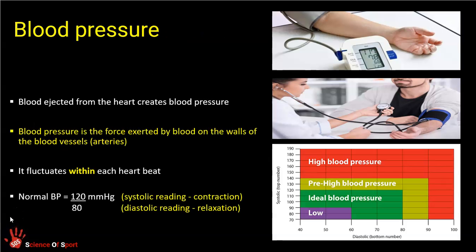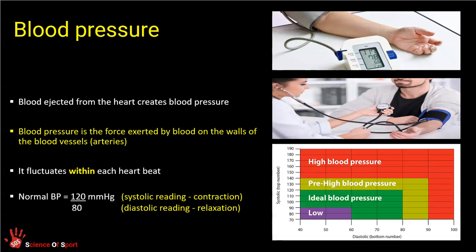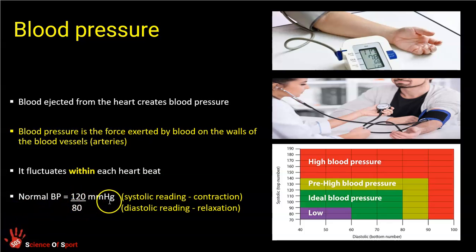I'm going to jump just a little bit away from the heart and the cardiac cycle and explore blood pressure first. The reason I'm connecting blood pressure is because the language we use to describe blood pressure readings is related to the terminology you need to understand for the cardiac cycle. Look — systole, diastole. Blood pressure has two readings. A very standard typical blood pressure value is 120 over 80 millimeters of mercury.